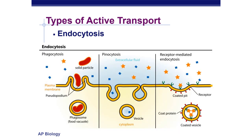Another type is called endocytosis. Endo means in — I'm big on prefixes and suffixes. Cyto is cell. So endocytosis is taking things into the cell, and there are a couple of different examples of that.